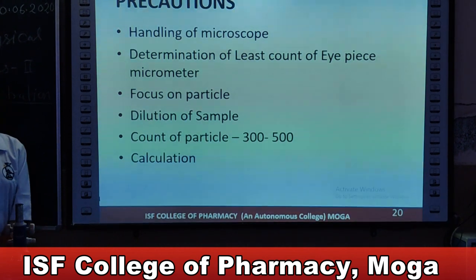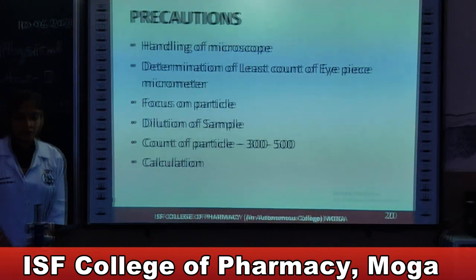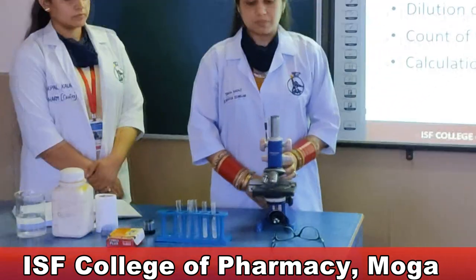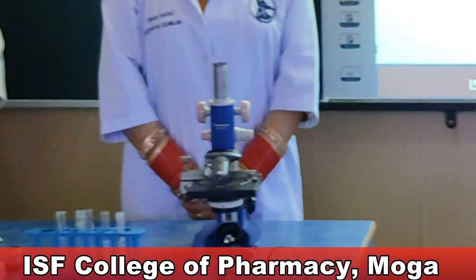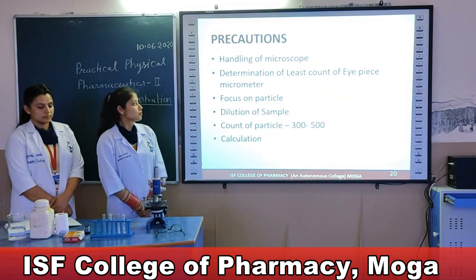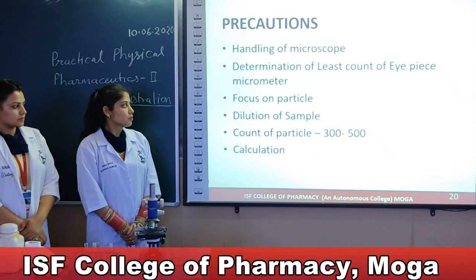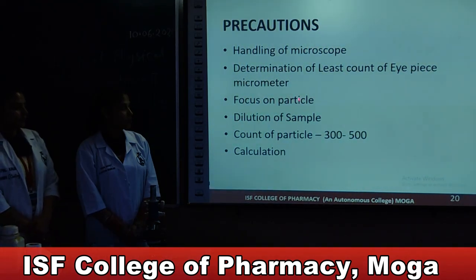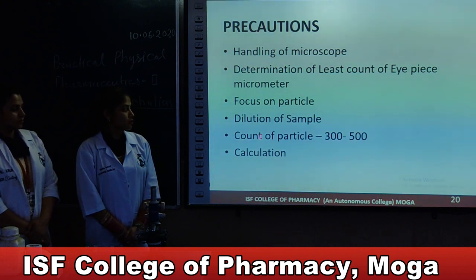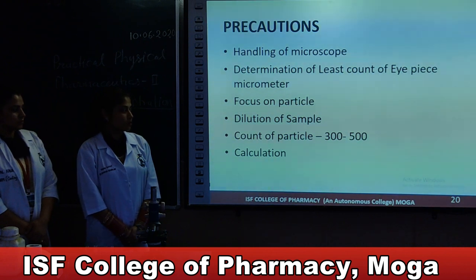Precautions essential for handling this experiment: proper handling of the microscope — this student microscope has 10x and 100x objectives. Cleaning and proper lighting are required. Determine the least count of the eyepiece micrometer with the stage micrometer. Properly coincide the stage micrometer and ocular micrometer. Focus on the particle properly at two diameter points. Dilute the sample so that particles are segregated with no agglomeration. Count a minimum of 300 to 500 particles for accuracy. Use the proper formula for calculation and determination of average particle size.